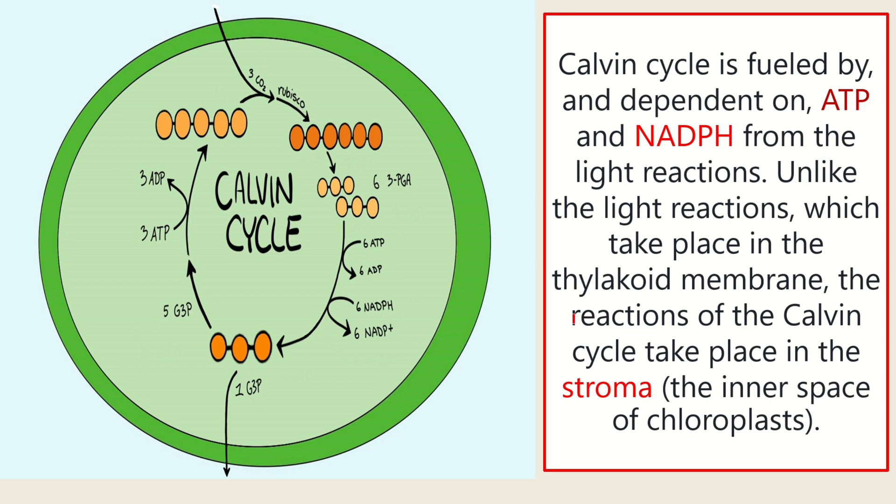Calvin Cycle is fueled by and dependent on ATP and NADPH. If you still remember, ATP and NADPH are products of light reactions. These carrier molecules are very important for the Calvin Cycle because they carry the energy and electrons that are needed to convert one compound to another compound.